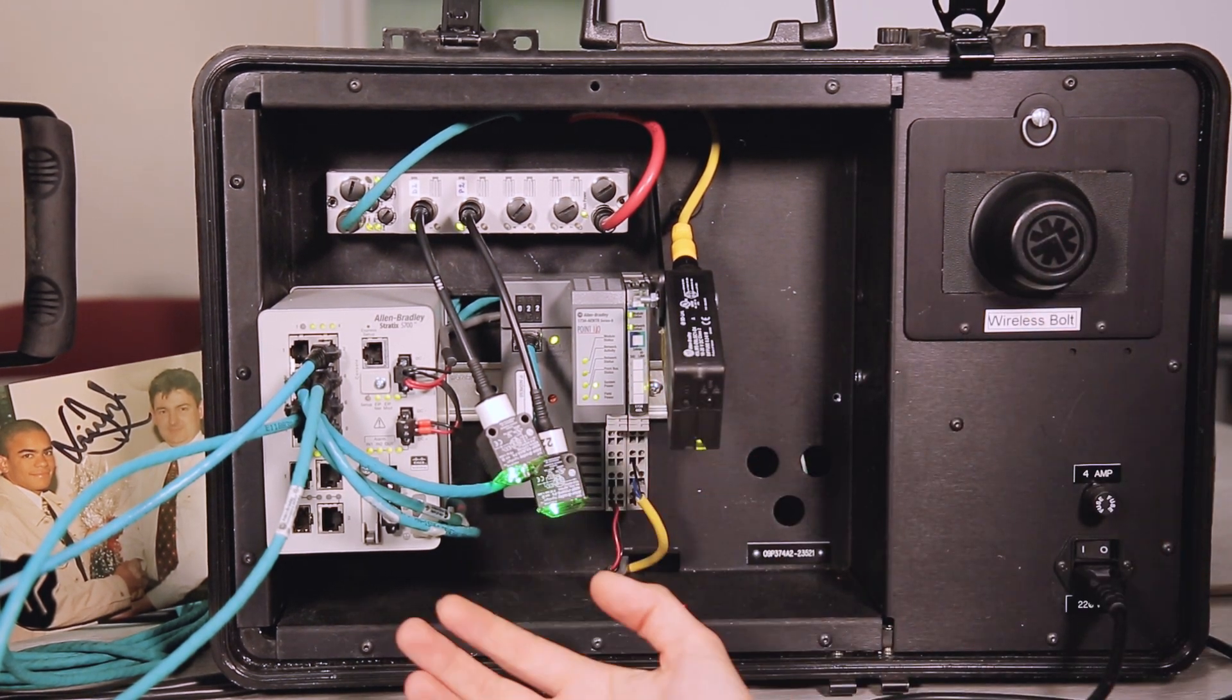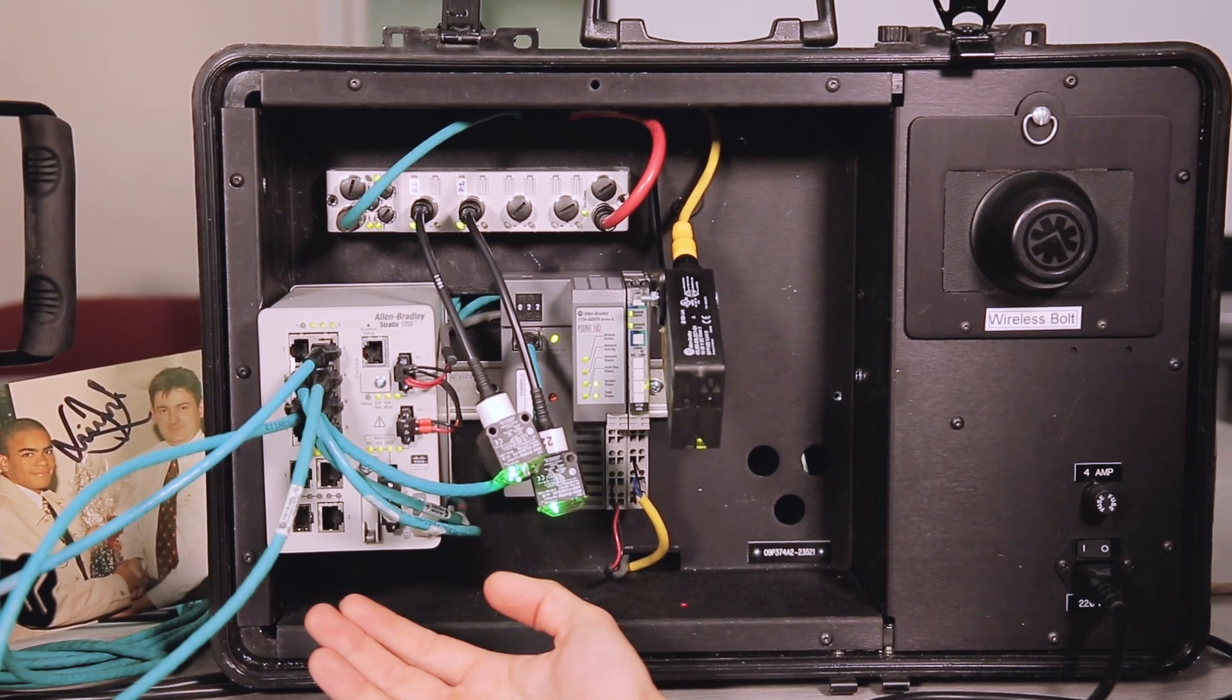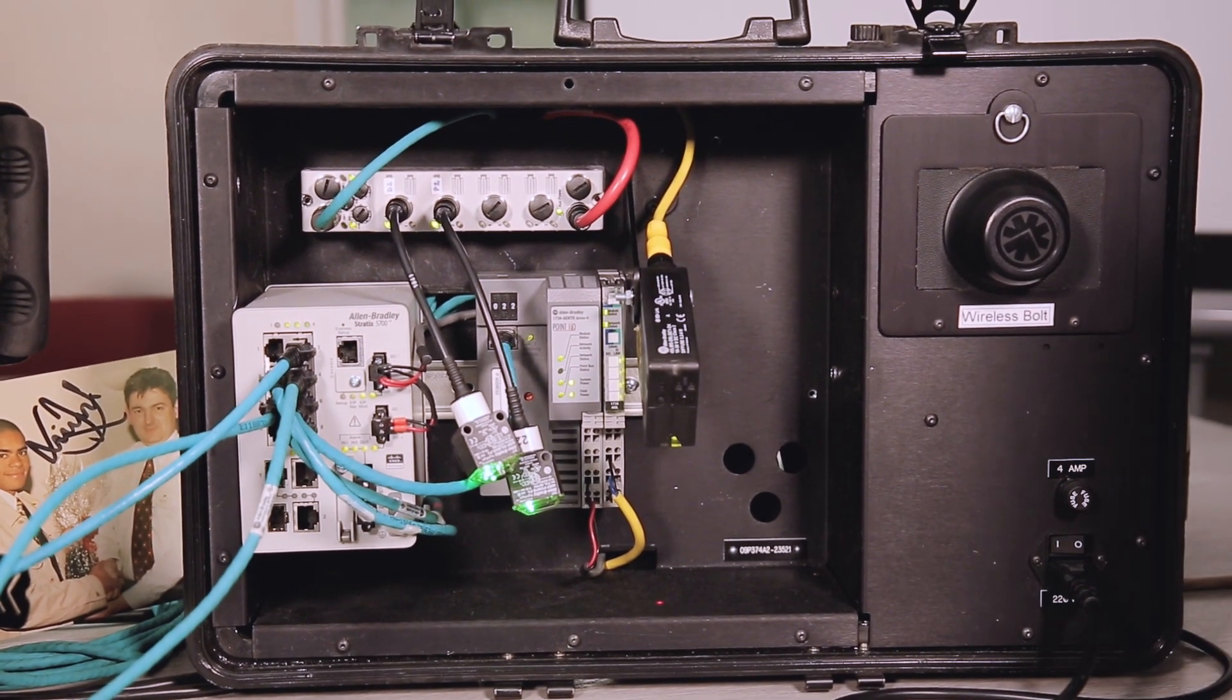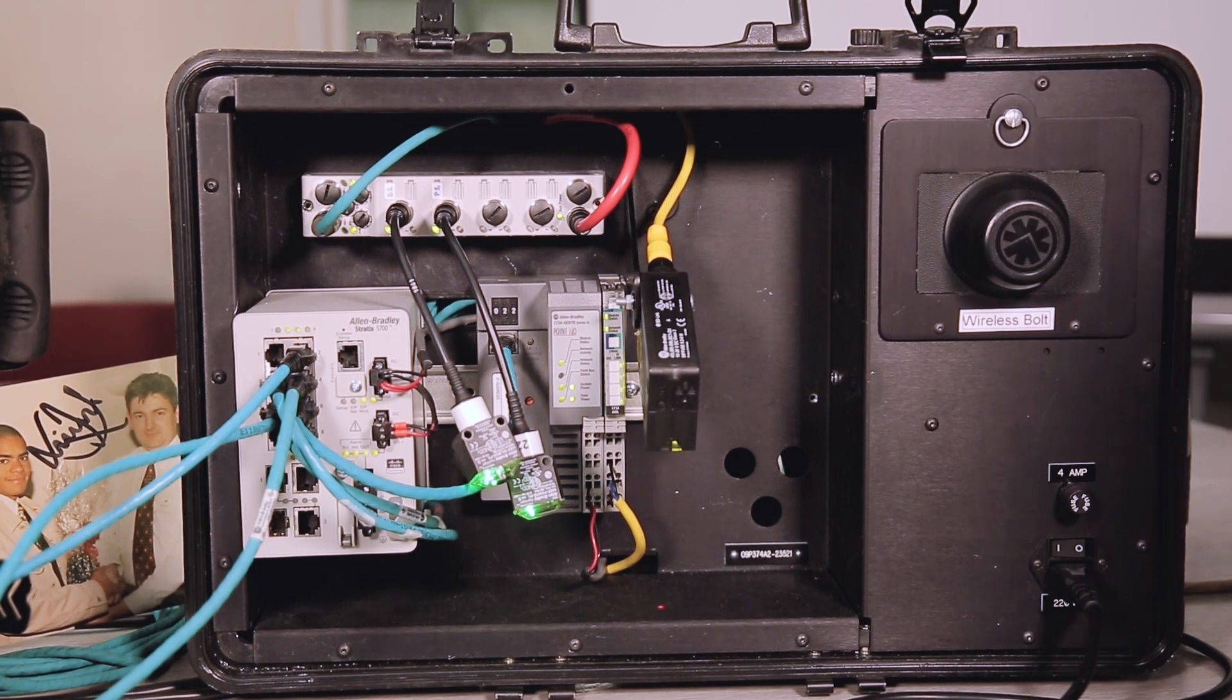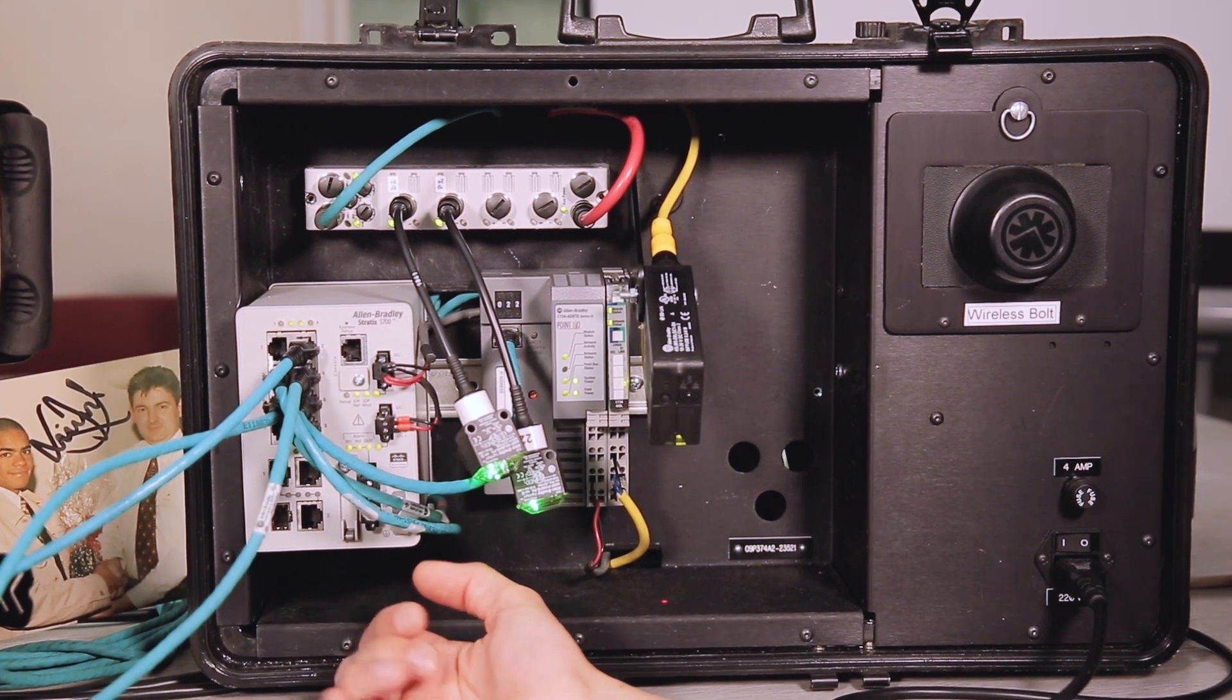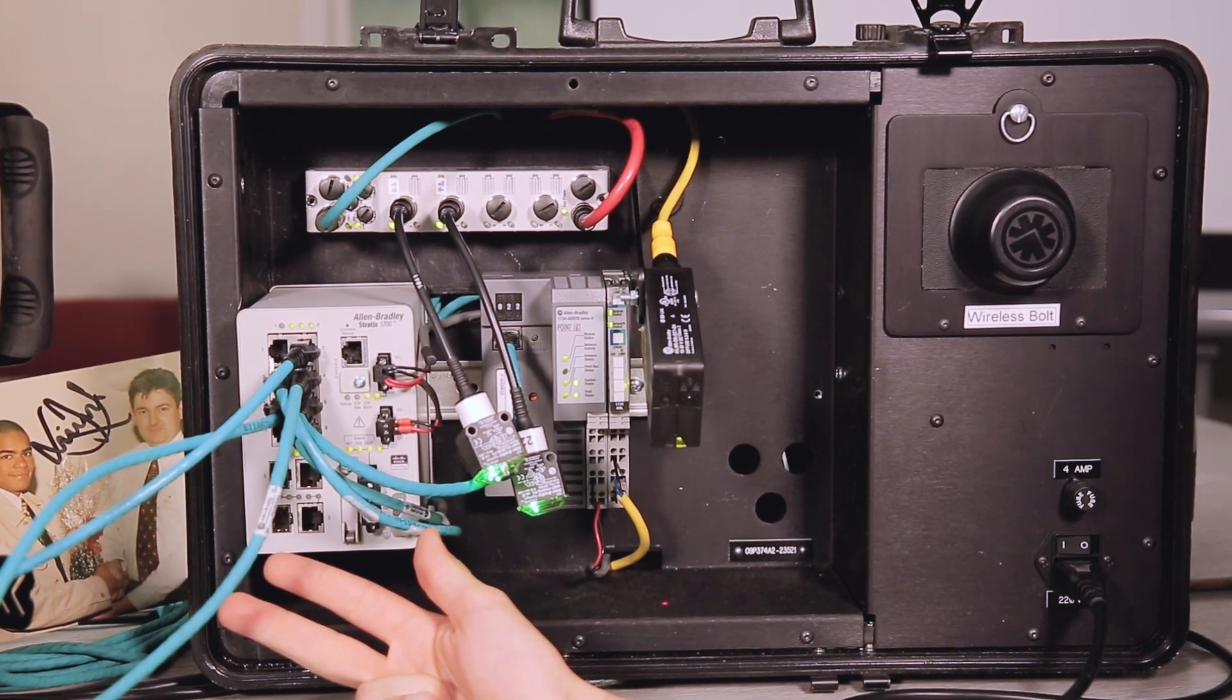This is mainly our sensor demonstration case with IO-Link, but I'll start from the bottom left which has got our Stratix 5700 managed switch. This is Cisco inside with Rockwell functionality designed to integrate into our PLCs and SCADA. We've got SFP fiber ports and what managed switch will allow you to do is prioritization of traffic, security, and provide quality of service.